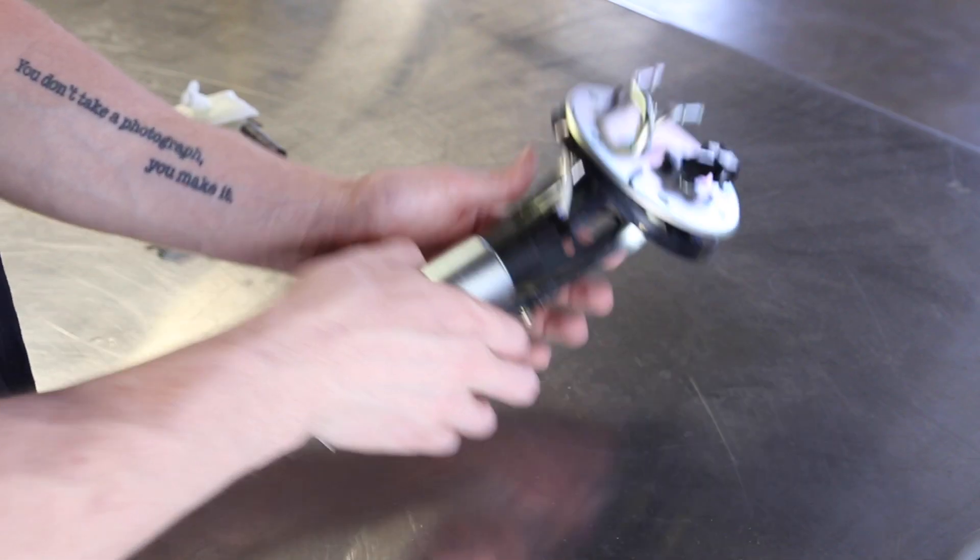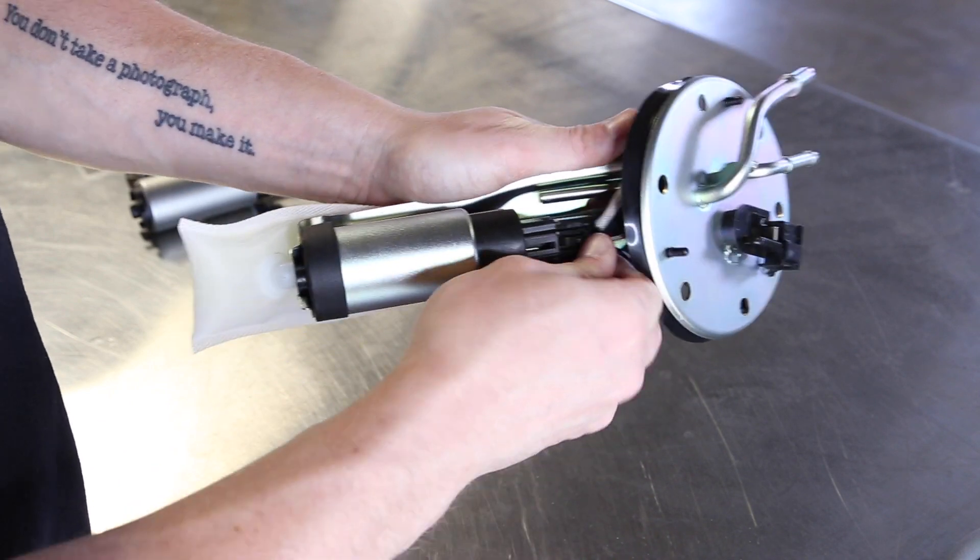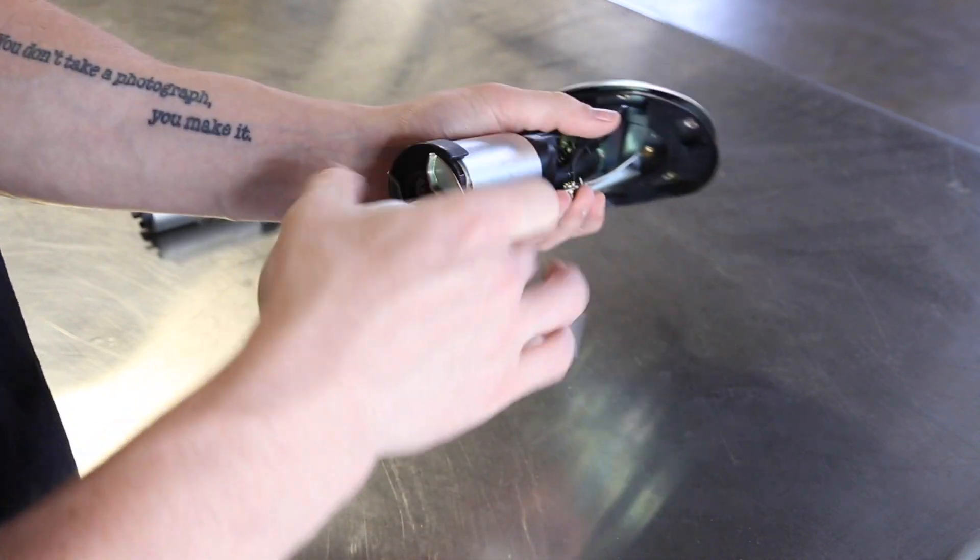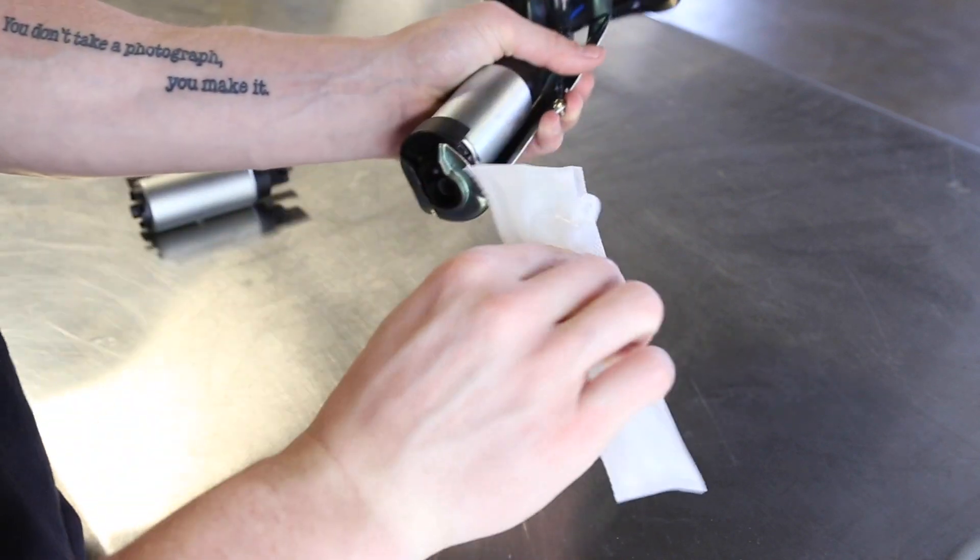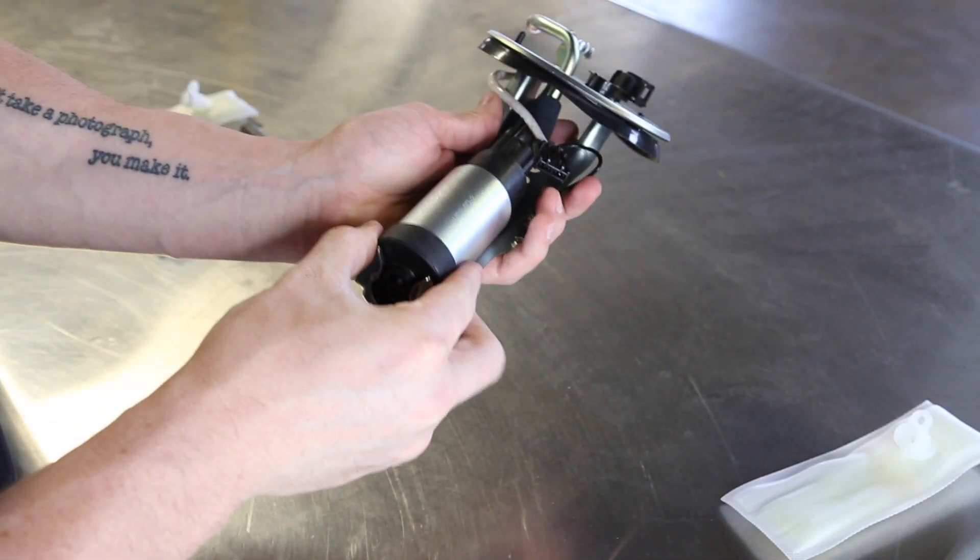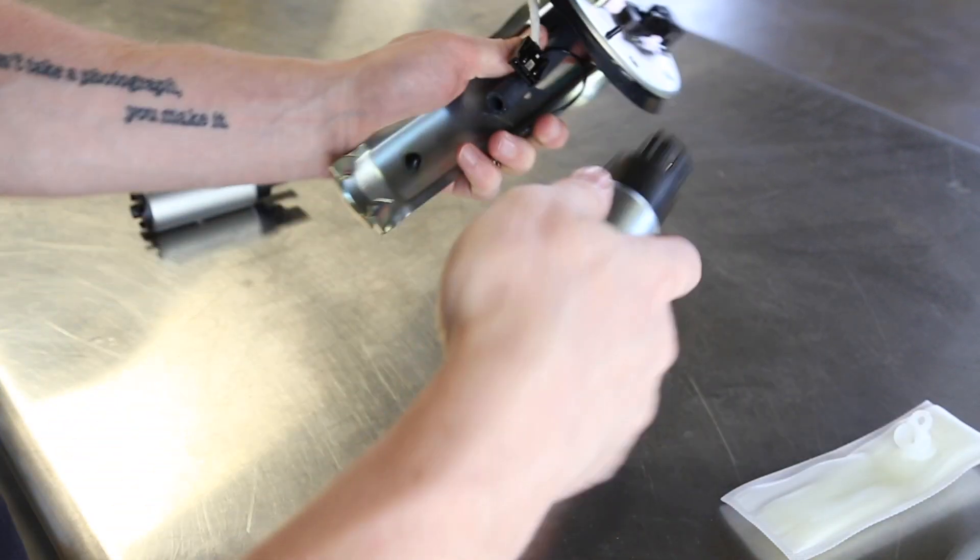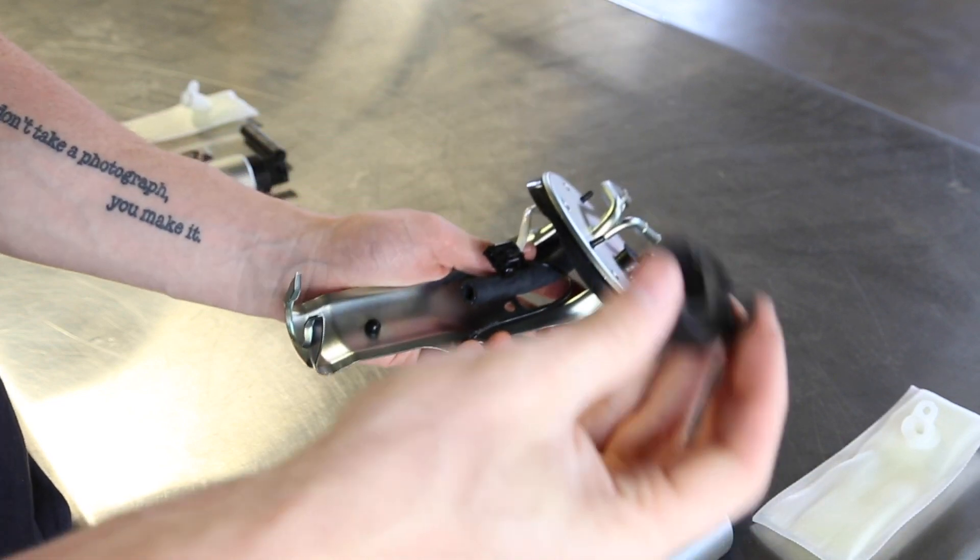First we'll begin by disconnecting the electrical connector from the pump and then remove the fuel sock. Remove the OE pump from the assembly and do not discard the OE pump isolator. We will reuse this with the new pump.